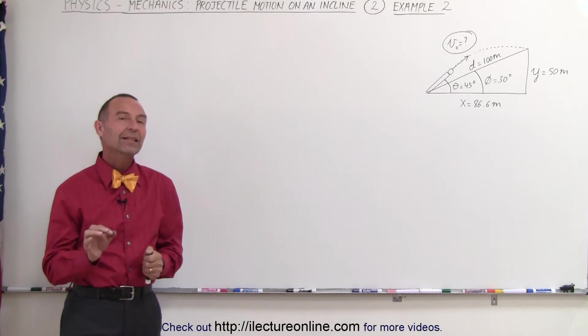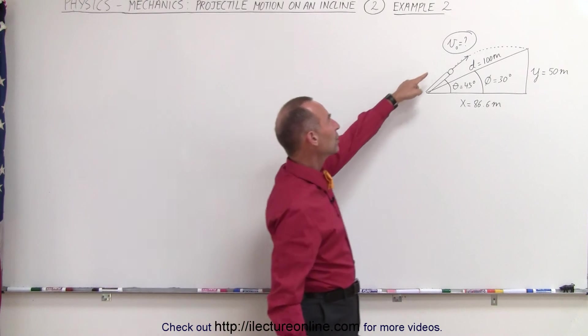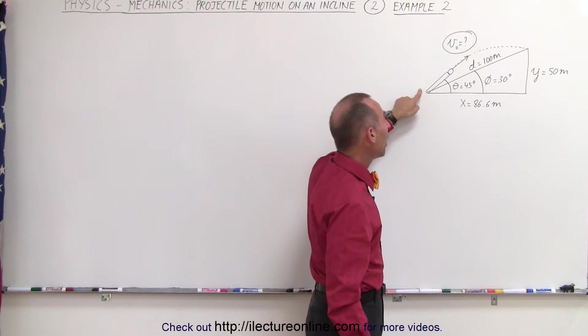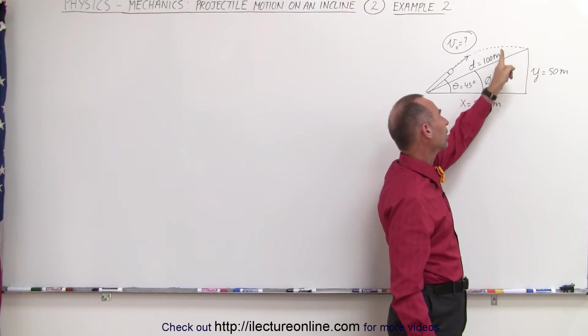It's a little different than the first example in that we do not know the initial velocity, but we do know how far up the incline the projectile will reach: 100 meters.